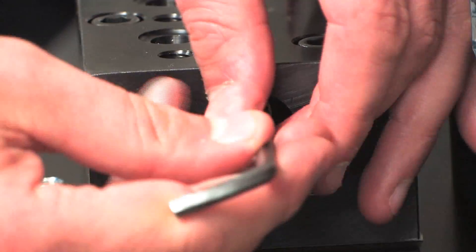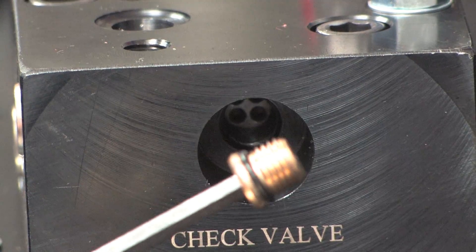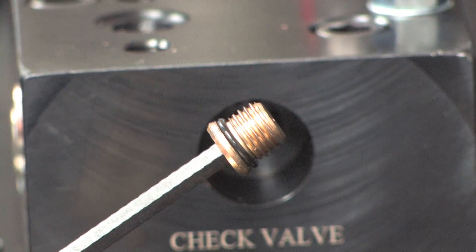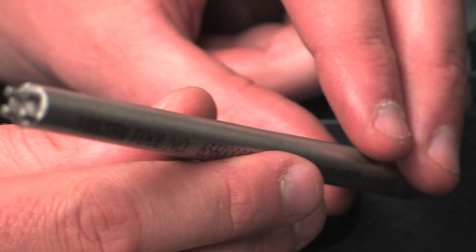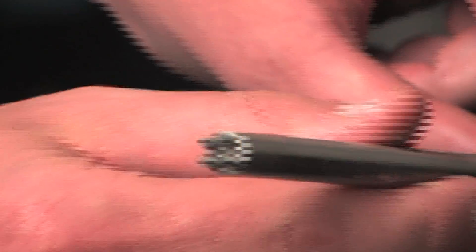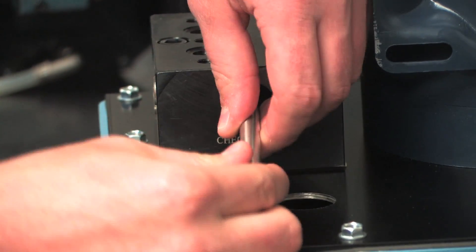First, remove the SAE4 plug. Remove the check valve from the port using the Vectek check valve tool, part number 65-6-0-0-0-0-0.